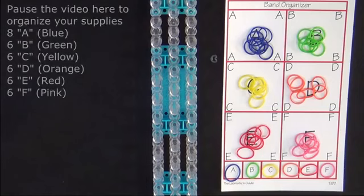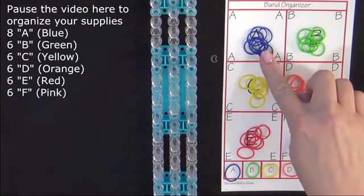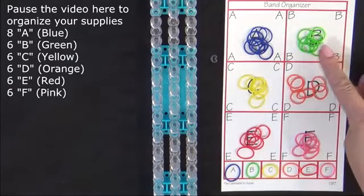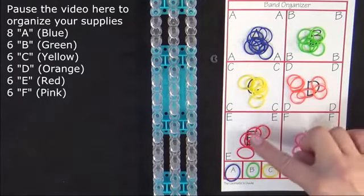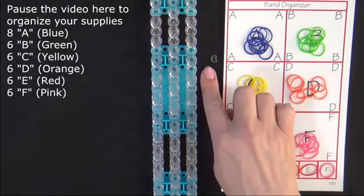To make this bracelet you will need 8 A colored bands and 6 each of B, C, D, E, and F. You'll also need a C clip.